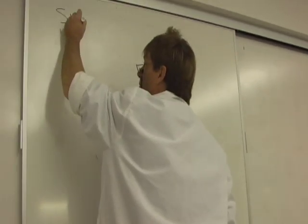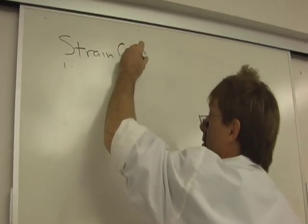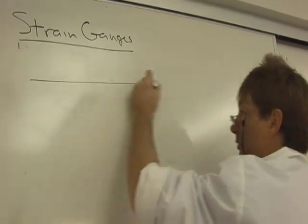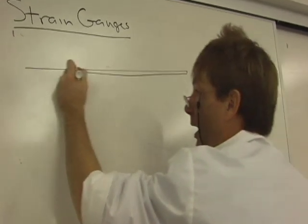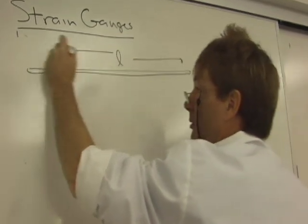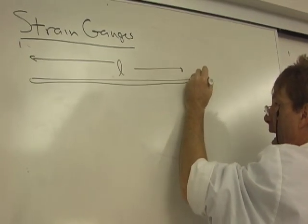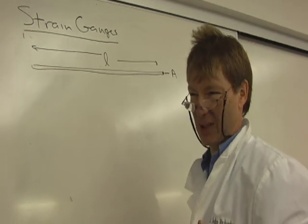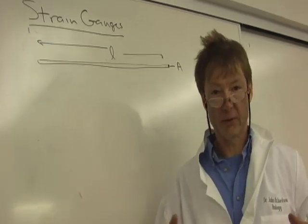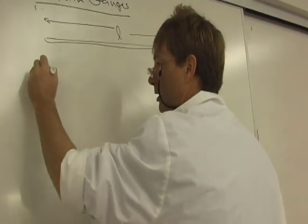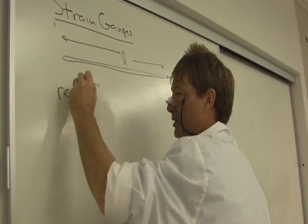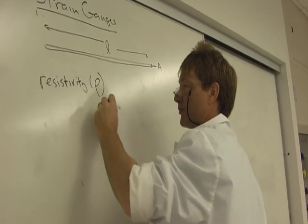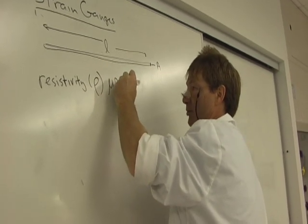So let's talk about strain gauges and how they work. Strain gauge works on a simple property of resistance in a wire. I've got a wire of length L, and it's got cross-sectional area A. Every material has its own type of resistivity. It's a tendency to resist the flow of electrons. And that's given by a resistivity. Resistivity is given by rho. And the units are generally like micro-ohms times centimeters.